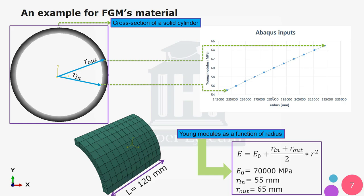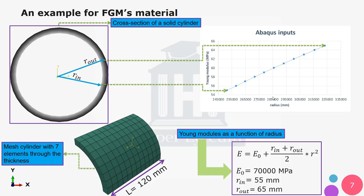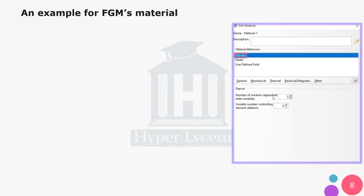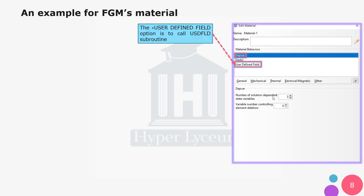Since cylinders are symmetrical structures, I have modeled a quarter of the cylinder with a length of 120 millimeters. Seven solid elements have been incorporated through the thickness of the cylinder. Here we can see the settings for Abaqus's material module that helps us create the FGM.